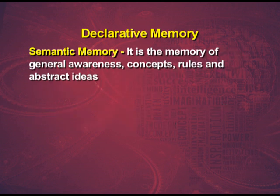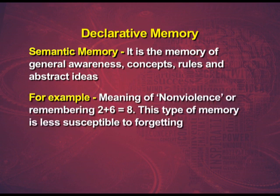Semantic memory is the memory of general awareness, concepts, rules and abstract ideas — for example, the meaning of non-violence, or remembering that 2 plus 6 equals 8. This type of memory is less susceptible to forgetting. Therefore, recalling what you ate for breakfast calls on episodic memory, whereas multiplying 37 by 3 calls on semantic memory. Both are a part of declarative memory.